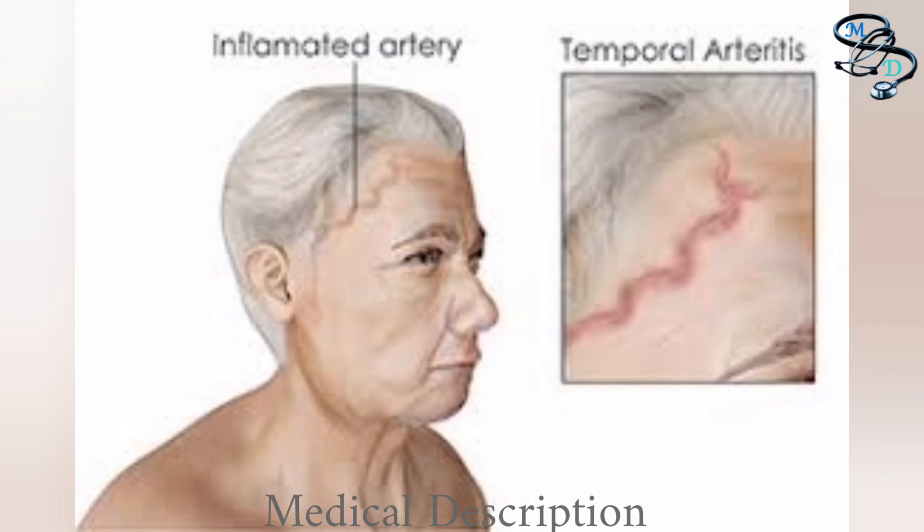Temporal arthritis can often be associated with a condition called polymyalgia rheumatica (PMR), which is an inflammatory condition affecting the shoulders, hip girdle, and neck, leading to significant stiffness and pain. PMR is far more common than temporal arthritis, but up to 30 percent of temporal arthritis patients have PMR.